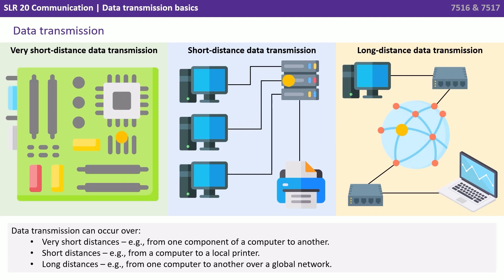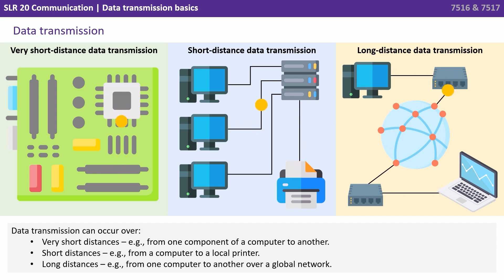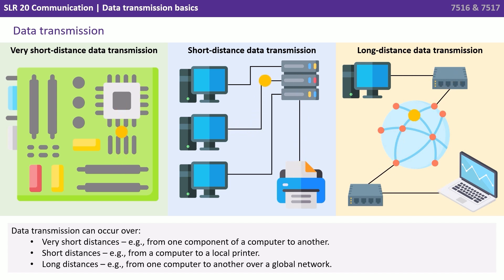Data transmission can occur over very short distances, for example from one component of a computer to another, short distances from a computer to a local printer, and over long distances, for example from one computer to another over a global network.